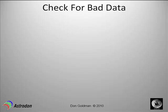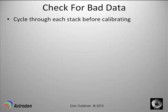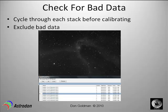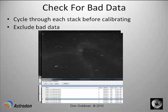It's very critical to check your data — all the individual frames — for bad data, which means cycling through each stack before you calibrate and excluding frames that are bad. For example, this H-alpha image looks perfect and is a usable frame. However, moving down a couple of frames you'll see a double star image. Something got bumped or moved, and it recorded a double image of the entire object, which means we have to reject this frame.